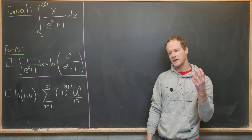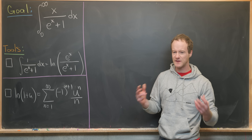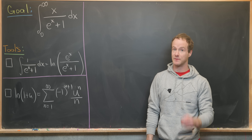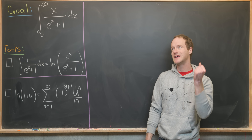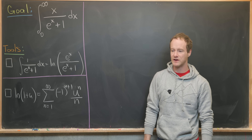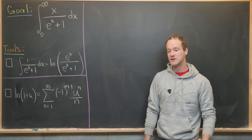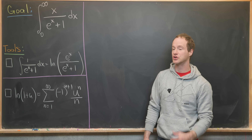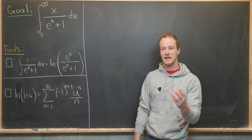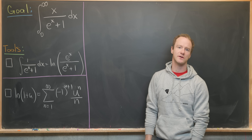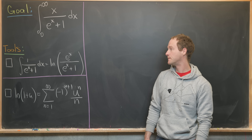Generally when you have something like that you should be thinking about using integration by parts, because taking the derivative of the polynomial makes it simpler. So perhaps you could transform this into an integral that's easier to calculate, and that's exactly what we'll do.